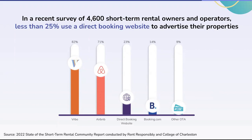So you can see a lot of people have their properties on the big OTAs — Vrbo, Airbnb, Booking.com — but the direct booking site channel is really being underutilized by the majority of owner-operators. There's a ton of opportunity to not only maintain your presence across all the OTAs, which is important, but to have a holistic, balanced strategy with the right channel mix coupled with a direct booking strategy.